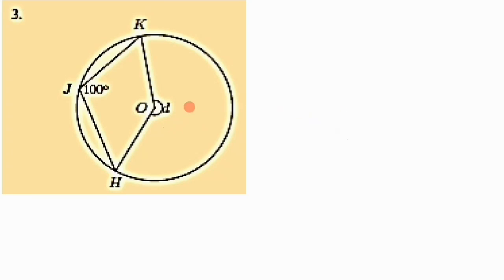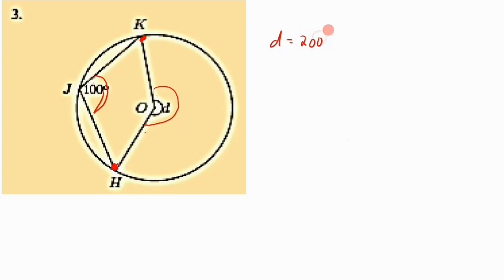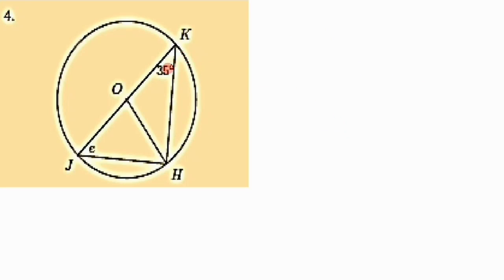For diagram three, we hold arc HK. HK subtends an angle of 100 degrees at the circumference and subtends angle D, which is an exterior angle, at the center. Do not be confused — this is not a cyclic quad because this point is at the center, not on the circumference. So angle at center equals two times angle at circumference, giving us D equals 200 degrees.